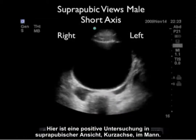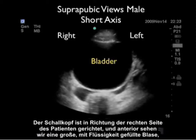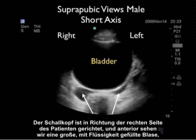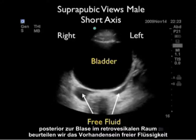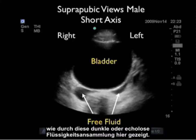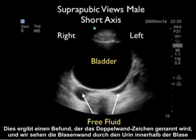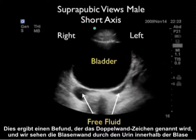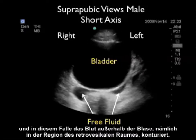Here's a positive examination — suprapubic view, short axis in a male. The probe is oriented towards the patient's right, and anteriorly we see a large fluid-filled bladder. Posterior to the bladder in the retrovesical space, we appreciate the presence of free fluid as shown by that dark or anechoic fluid collection. This gives a finding known as the double wall sign — the wall of the bladder is outlined by urine inside the bladder and blood outside the bladder in the retrovesical space.